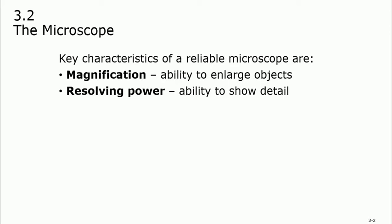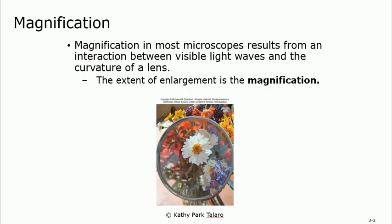For the microscope, we need to understand magnification and resolving power. Magnification is the ability to enlarge an object — to make it double, triple, 10 times, 50 times, whatever. Resolving power is the ability to show details. Good resolution means you can see better details. Magnification is the extent of enlargement, and it's an interaction of light waves through different lenses — the light wave goes through the curvature of one lens and then another, so it will be magnified.